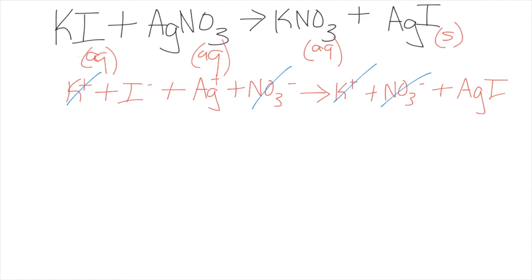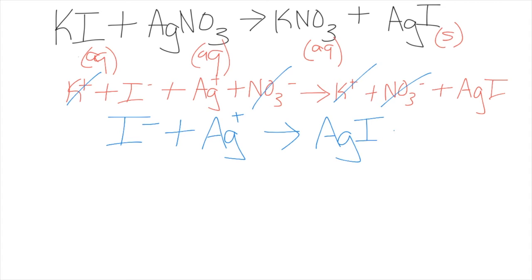Those are called your spectator ions. The leftover gives you your net ionic equation — the final equation. So this is what actually happens: the aqueous I− and aqueous Ag+ combine to form solid silver iodide (AgI).